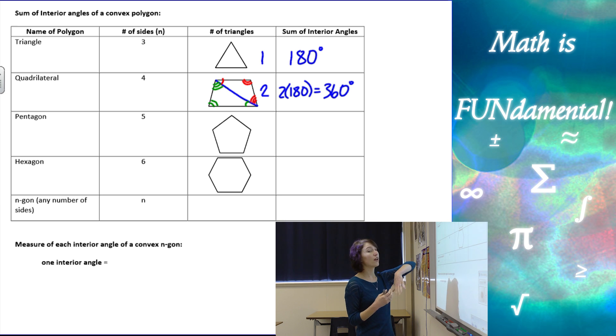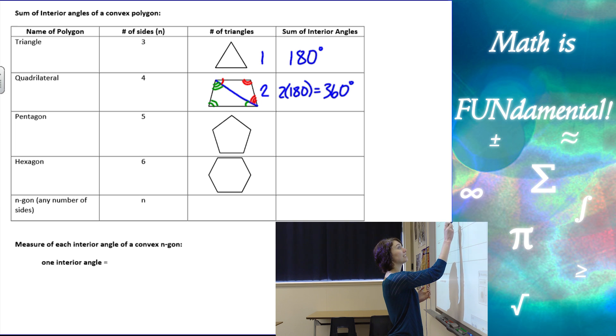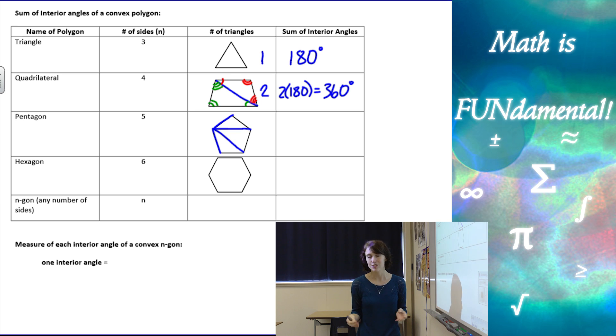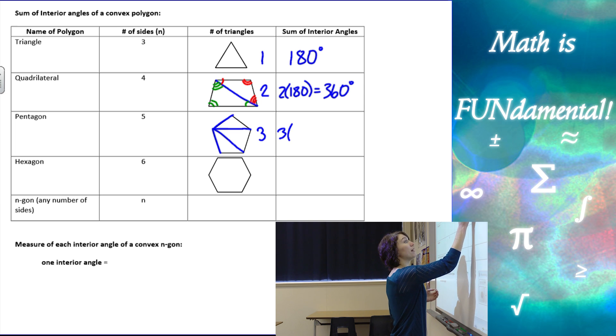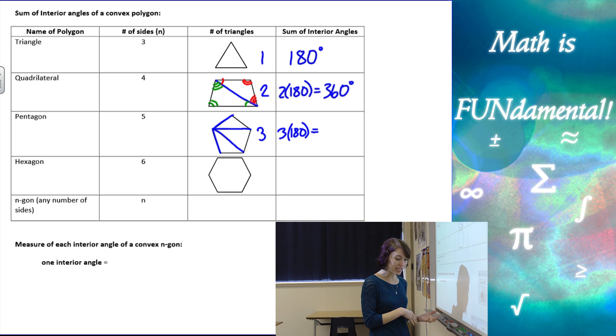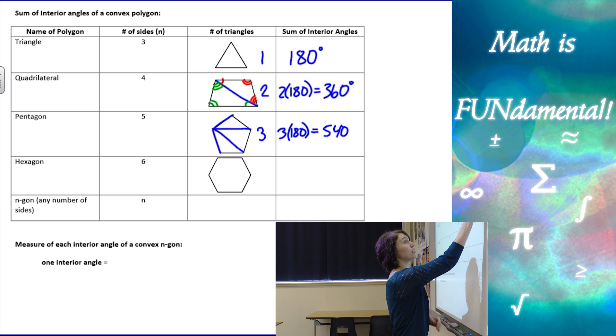Similarly, a pentagon has five sides. I can take any vertex and connect the vertices like that. If I connect that vertex to the other ones, it doesn't create any more triangles because those lines were already there. But here we can see that in a pentagon, we have three triangles. So the sum of the interior angles is going to be three times 180, which is 540 degrees.